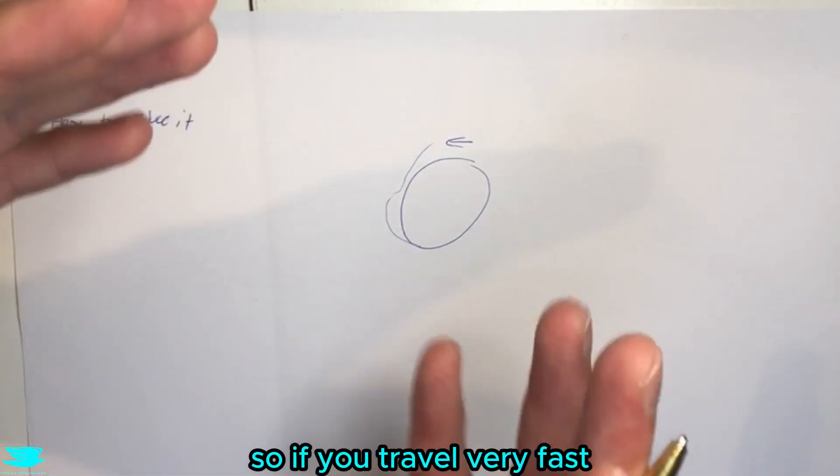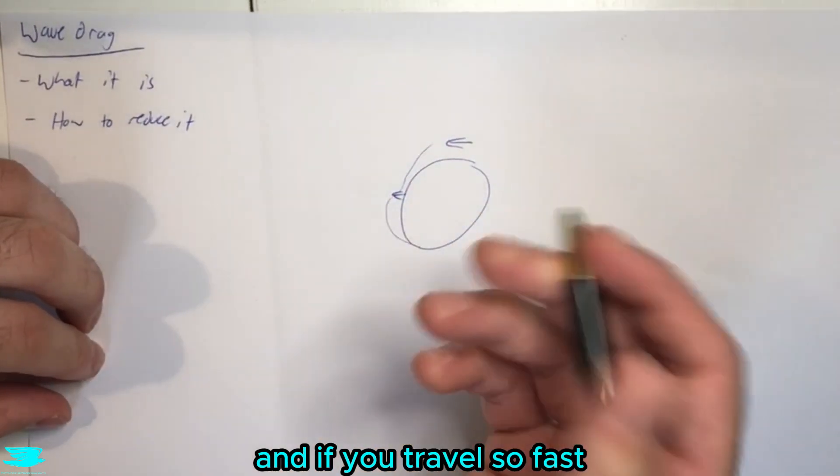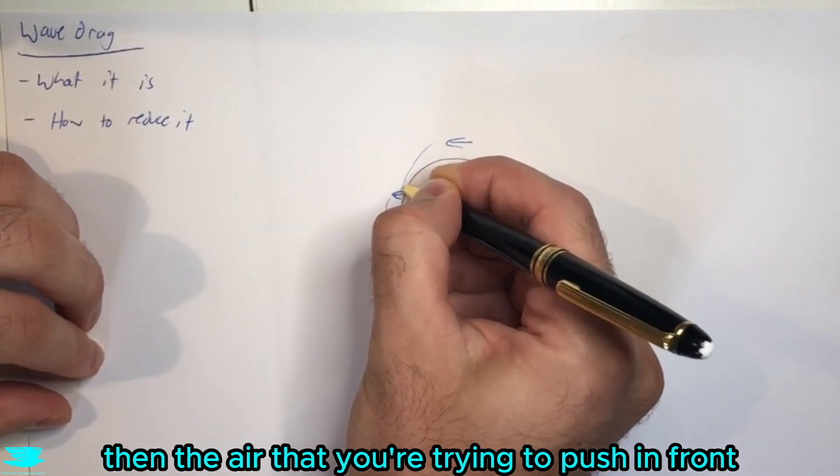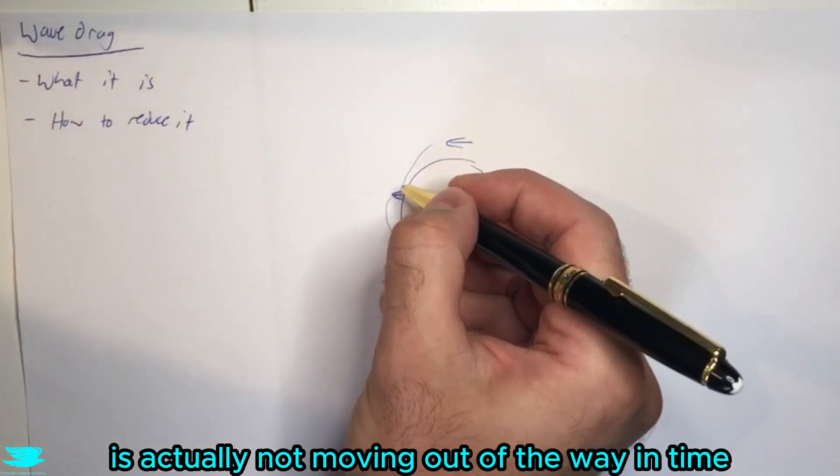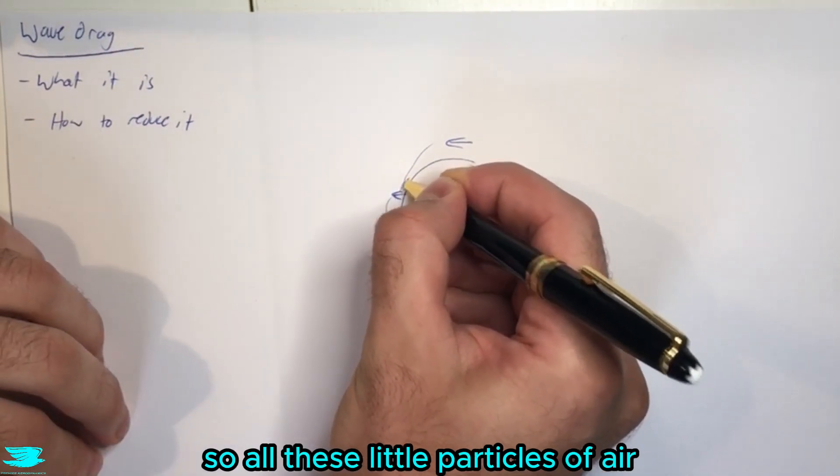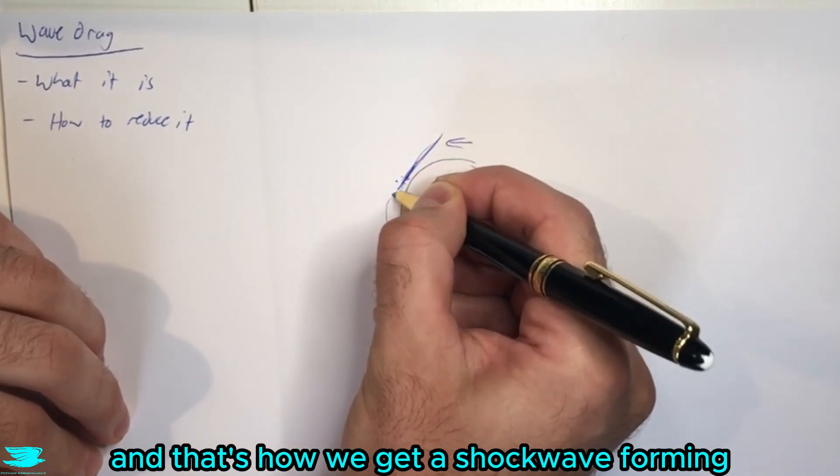So if you travel very fast, what you do is you're pushing all this air in front of you and if you travel so fast, then the air that you're trying to push in front and get around your object is actually not moving out of the way in time. So all these little particles of air start to compress together and that's how we get a shockwave forming.